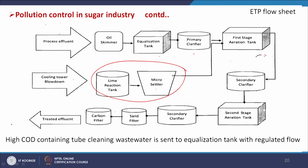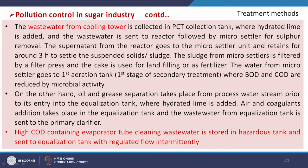After the first aeration tank, the water goes to a secondary clarifier, then to a second stage aeration tank, and then to a secondary clarifier tube settler. Sludge is recycled to the first and second aeration tanks. High-COD evaporator tube-cleaning wastewater is sent to the equalization tank with regulated intermittent flow so that the microbial load in the aeration tank is not overwhelmed.